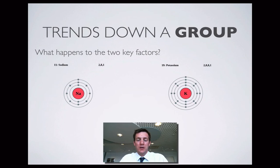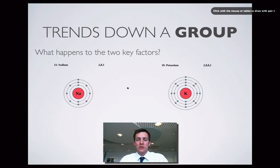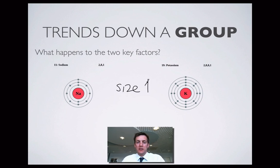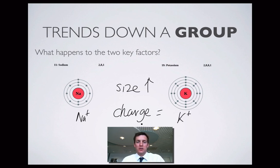Now let's look at what happens as you go down a group. The size will be changing, but the charge won't. We're comparing neighbours in the periodic table, but these are both in group 1 — sodium above potassium, sodium in period 3 and potassium in period 4. We've got three shells for sodium and four shells for potassium, so we'd expect the size to be increasing as we go down a group. But the charge within a group isn't going to be changing — sodium forms 1+ ions and potassium forms 1+ ions. Similarly, in group 2, they all form 2+ ions. So the size is getting bigger, the attraction is getting weaker, and the charge isn't changing, so the trend in melting point as you go down a group is that it gradually falls.